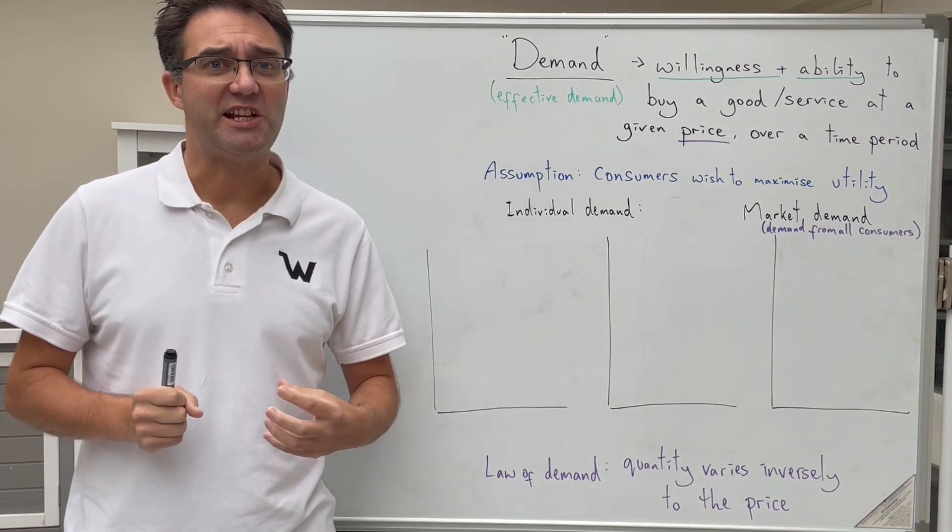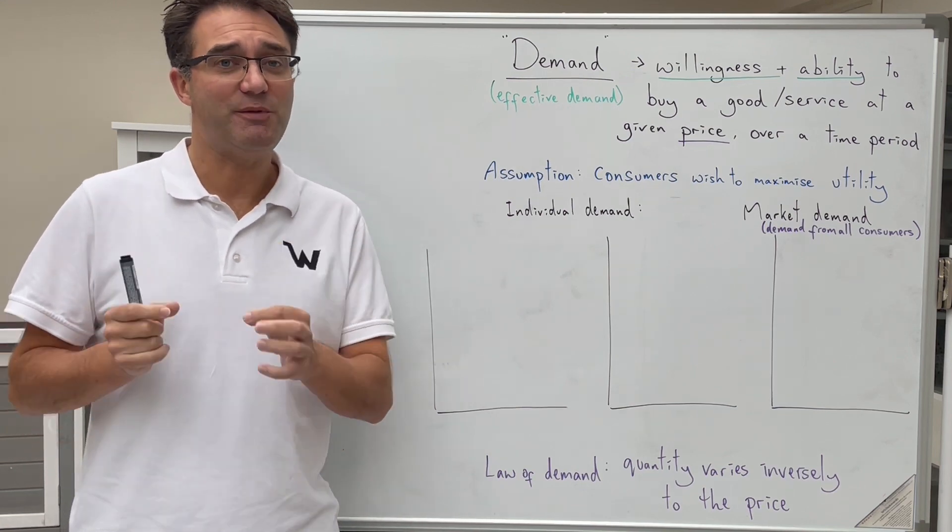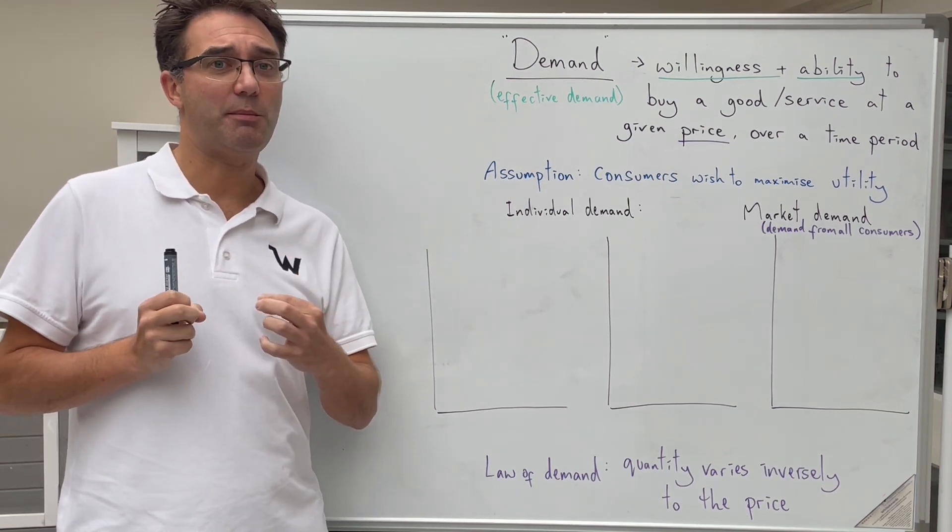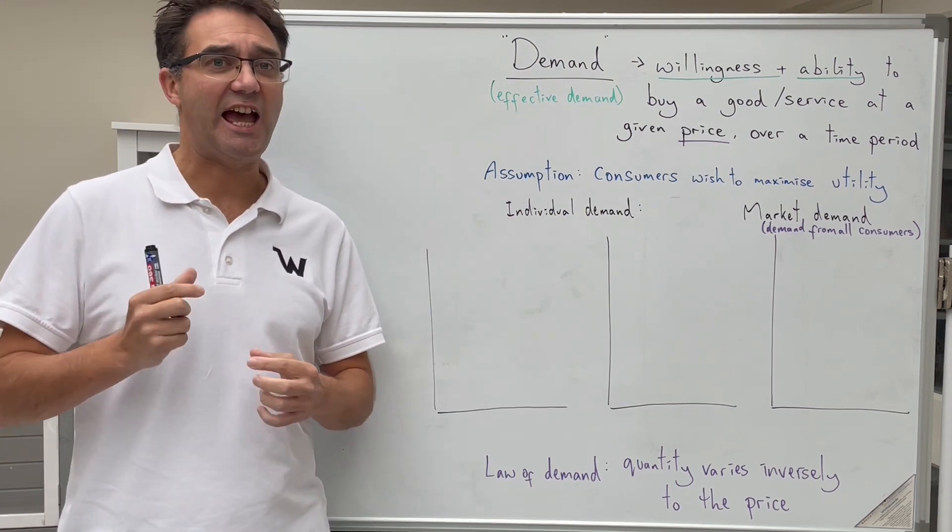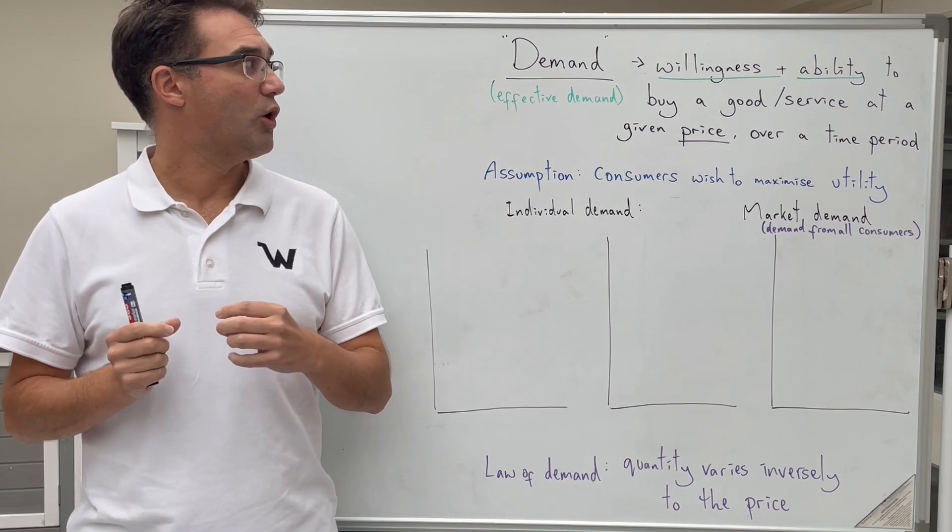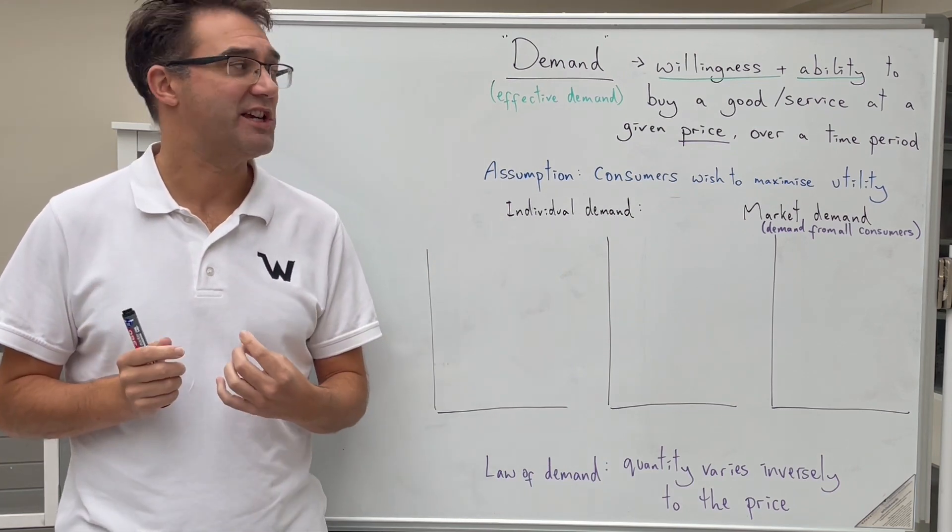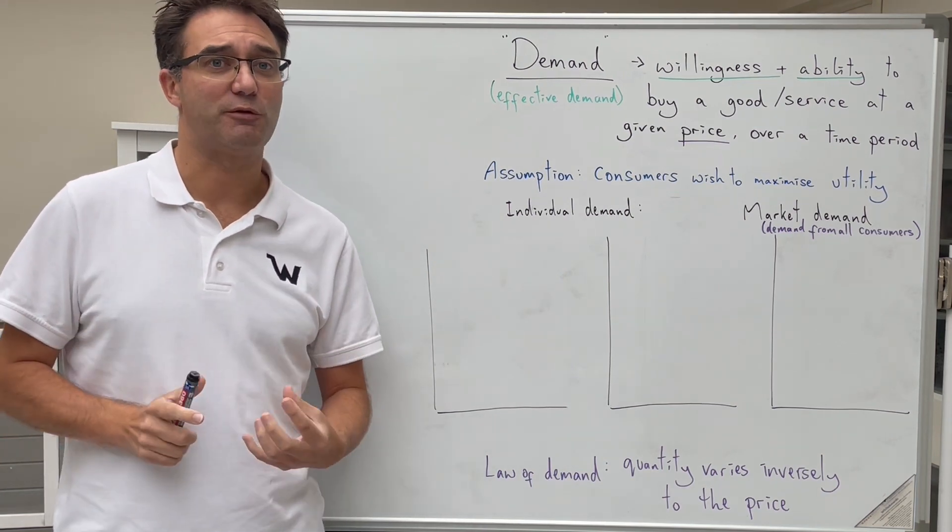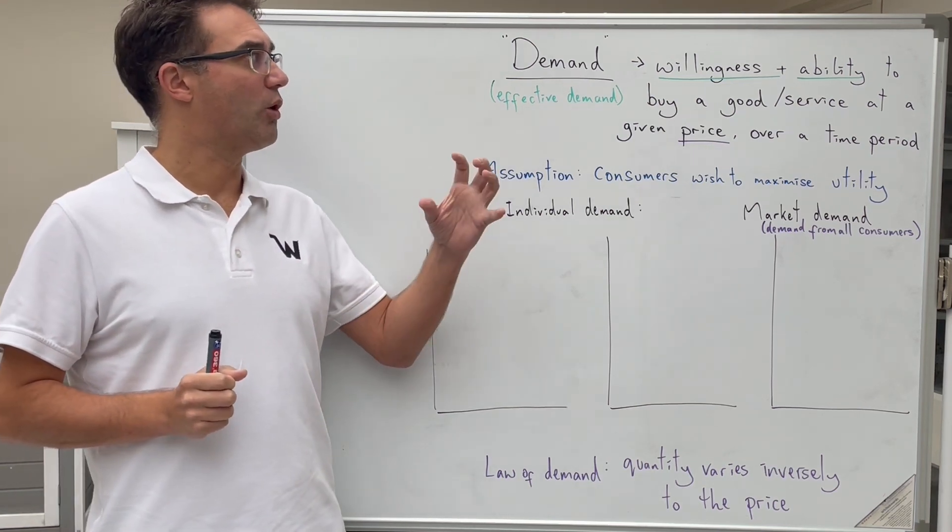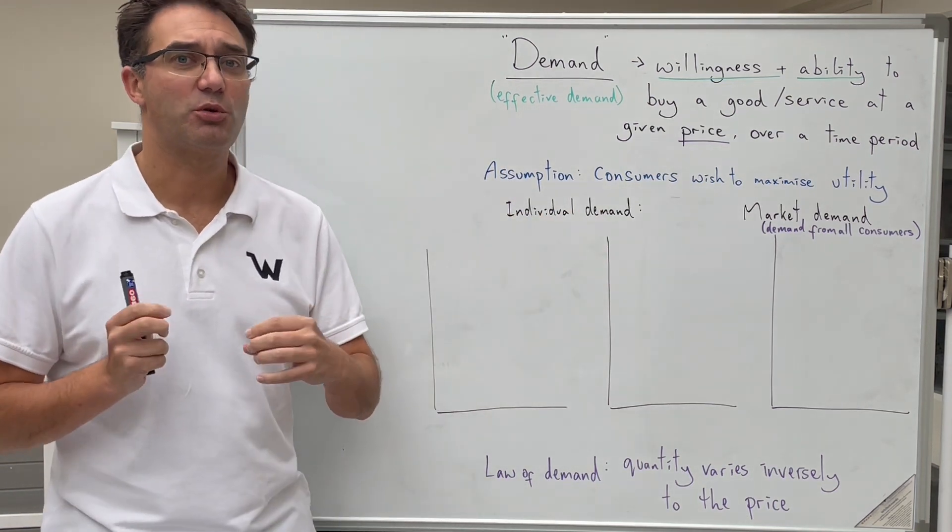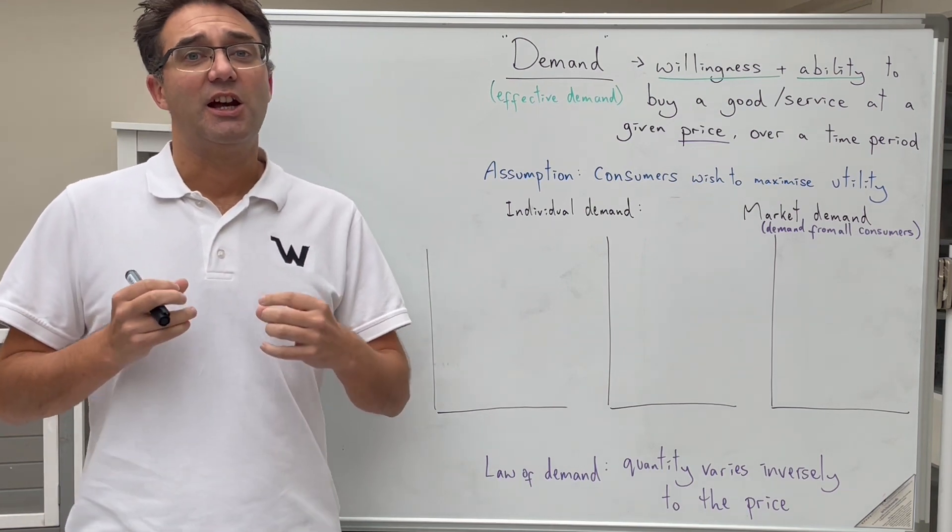The first thing that we need to know is what we mean by the term demand and we need to be very specific here. We're talking about effective demand, that is the willingness and ability of someone to buy a good or service at a given price over a time period. It's really important that we don't just talk about what we want to buy, but also people's ability to buy that.